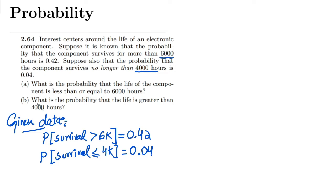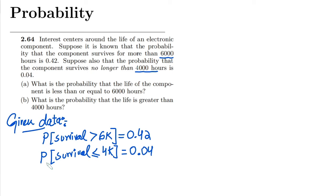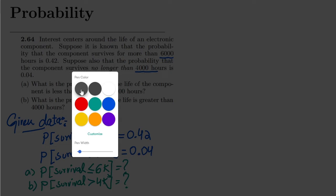On the basis of these conditions, here is what we have to find. For part a, I have to find the probability that the life of the component is less than or equal to 6000 hours, i.e., P(X ≤ 6000). For part b, I have to find the probability that the life is greater than 4000 hours, i.e., P(X > 4000).